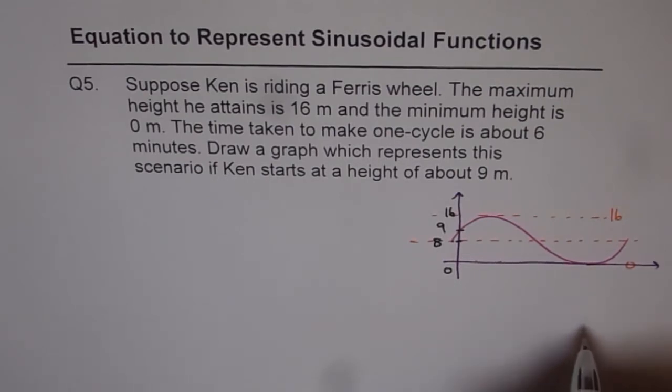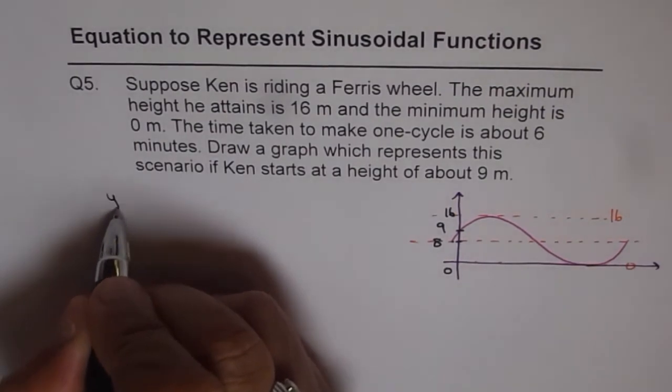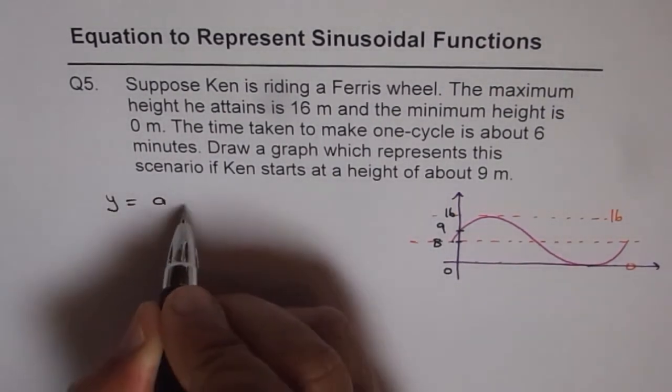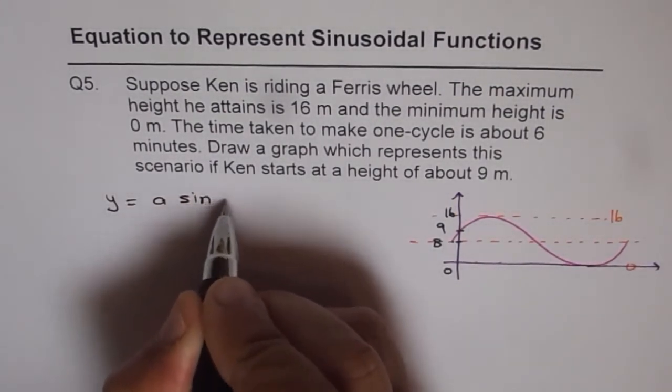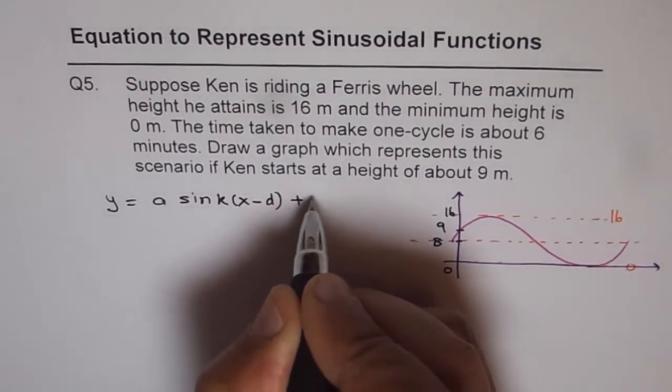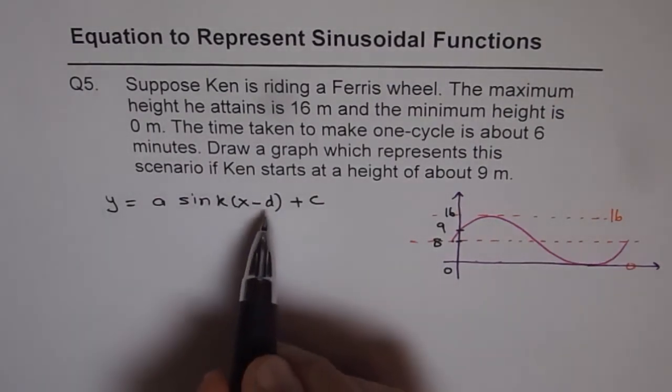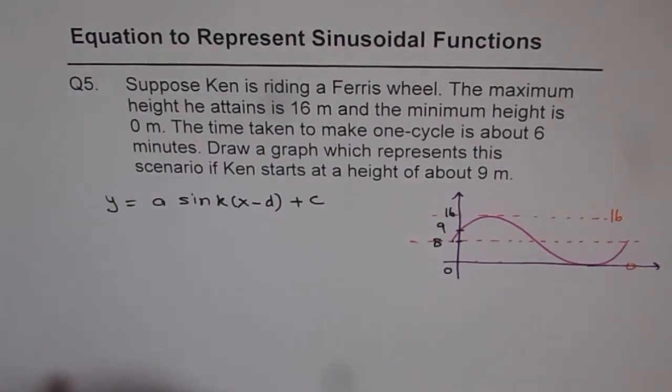Now let's write down what we have so that we can find the equation. So we will write the equation in the form of a sine function. So I would like to write the equation in the form of y equals a sine of k x minus d plus c. Now let us see how to find a, d and c and also k from here.